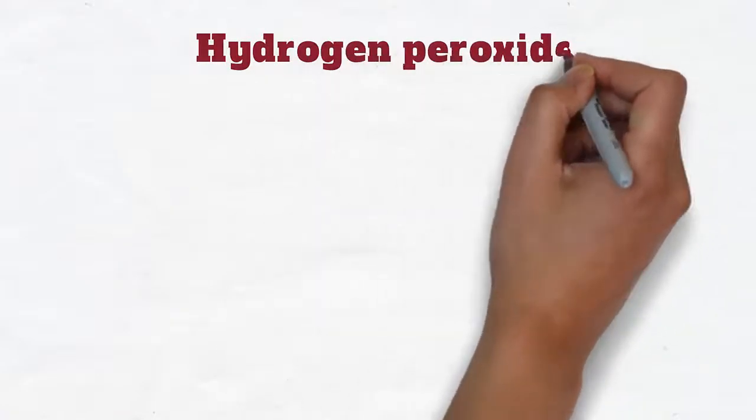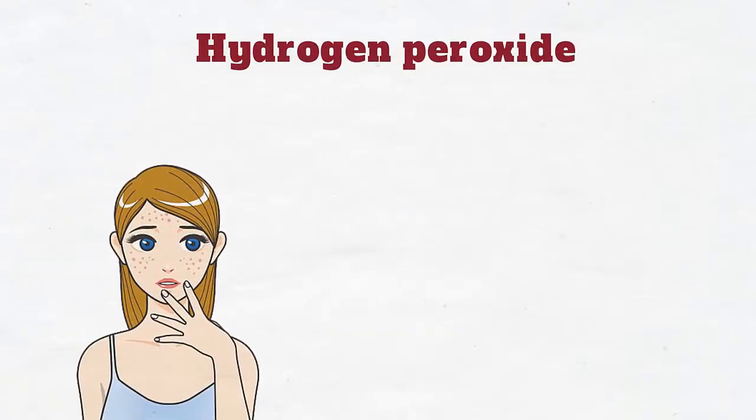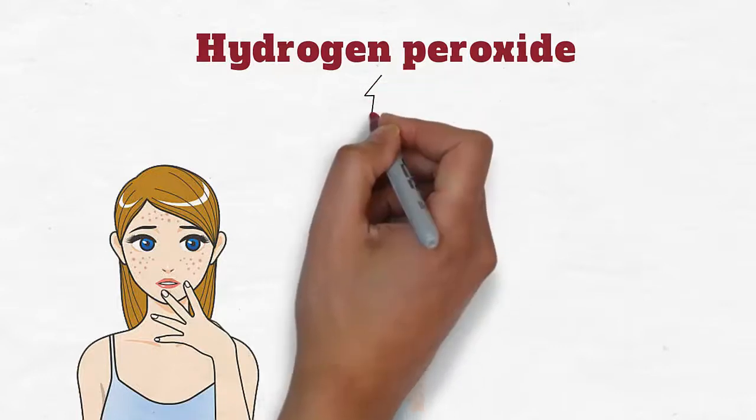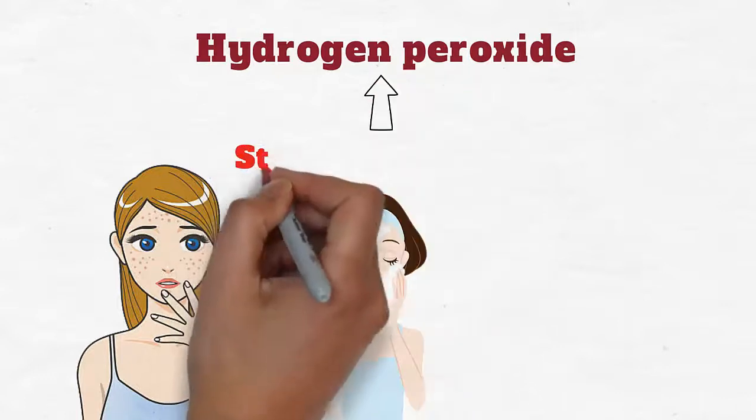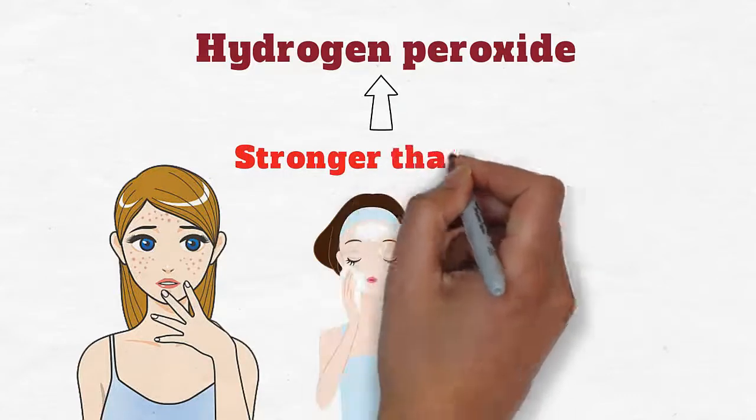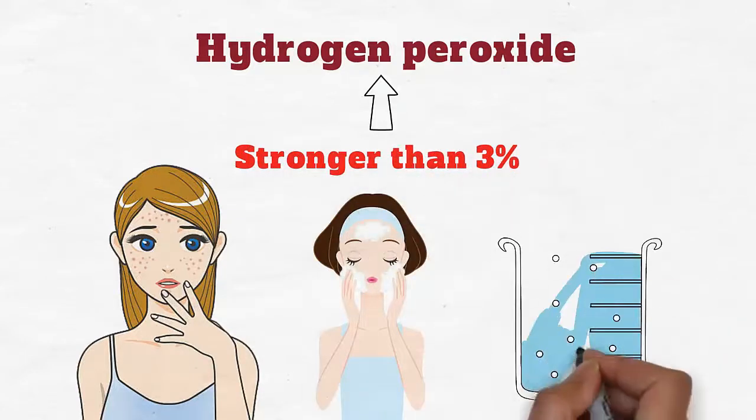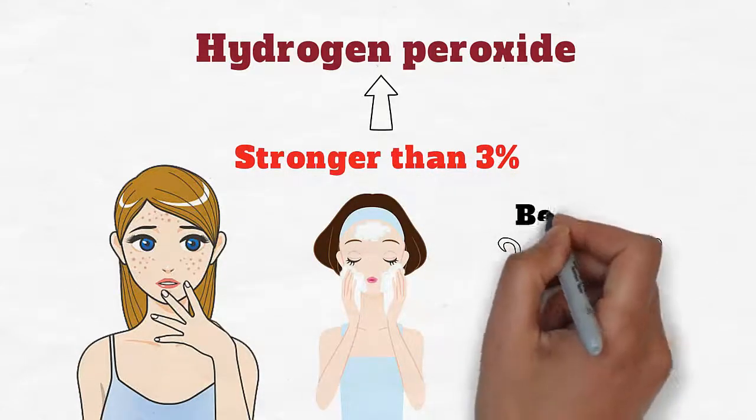To apply hydrogen peroxide on the acne affected area of your skin, you should first wash the skin with a mild soap. If you bought a hydrogen peroxide solution stronger than 3%, then you should take a little of it and dilute it to below 3% with water.